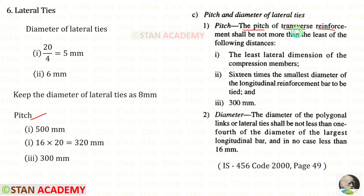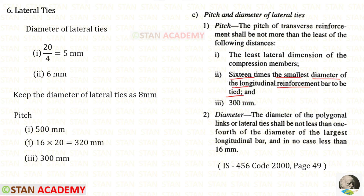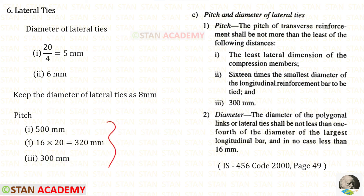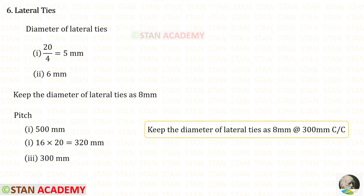Now let us design the pitch. The pitch of the transverse reinforcement shall not be more than the least of the following: the least lateral dimension of the compression member — in our case 500 millimeter; sixteen times the smallest diameter of the longitudinal reinforcement bar to be tied — 16 into 20 gives 320 millimeter; and 300 millimeter. From these three values we select the minimum, which is 300 millimeter. So let us keep the lateral ties of 8 millimeter diameter at a spacing of 300 millimeter.